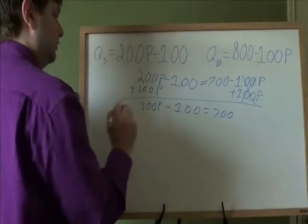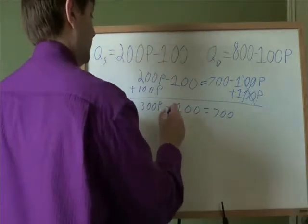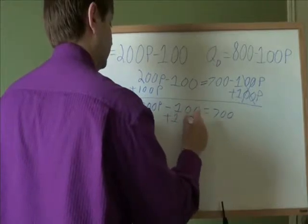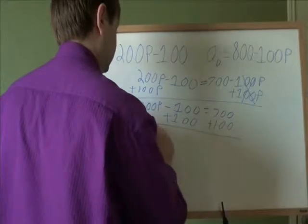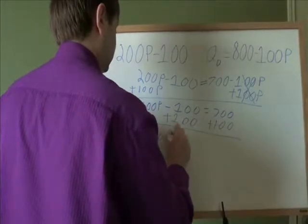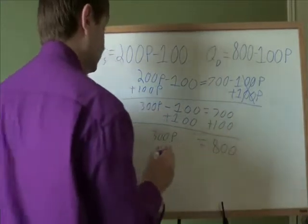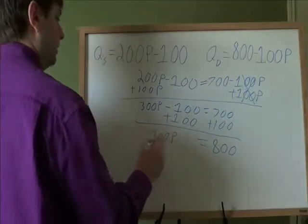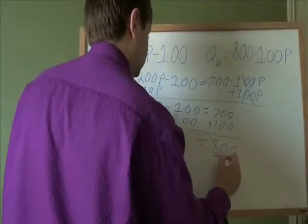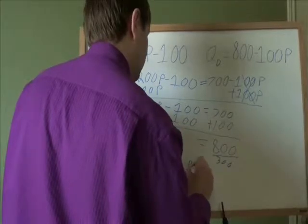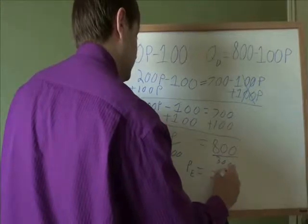And then from there, we need to get p by itself. So first, to get rid of this minus 100, we're going to add 100. 700 plus 100 is 800. And the next step to get p by itself, we divide by 300. So the equilibrium price is 800 divided by 300, which is 267.